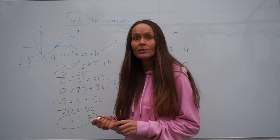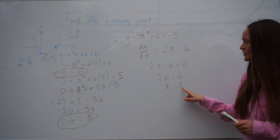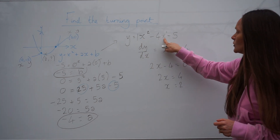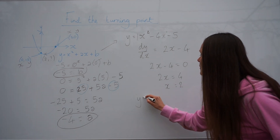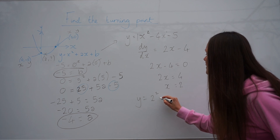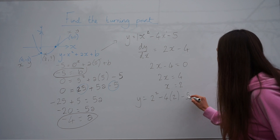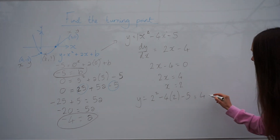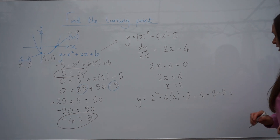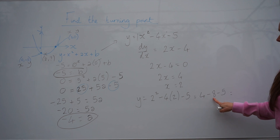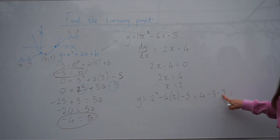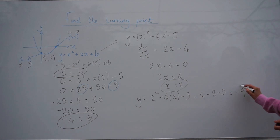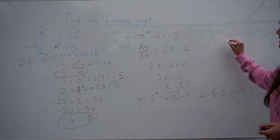Now we just need to work out the value of y. To work out the y-value, substitute the x-coordinate back into the equation we found earlier, changing both x values to 2. The equation becomes y equals 2 squared minus 4 lots of 2 minus 5. Well, 2 squared is 4, minus 4 multiplied by 2 is minus 8, and then minus 5. So 4 take away 8 is negative 4, take away another 5 gives negative 9. So the coordinates of the turning point are x equals 2, y equals negative 9.